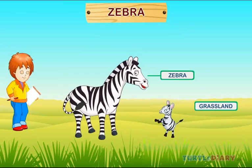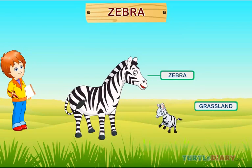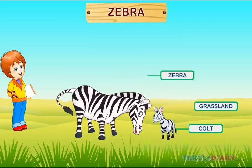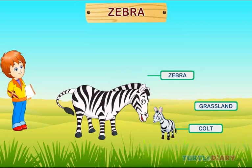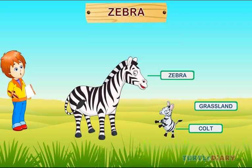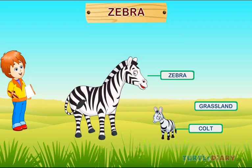Zebra. Here is a zebra. A baby zebra is called a colt. Zebras are found in grasslands, woodlands, mountains, and hills.